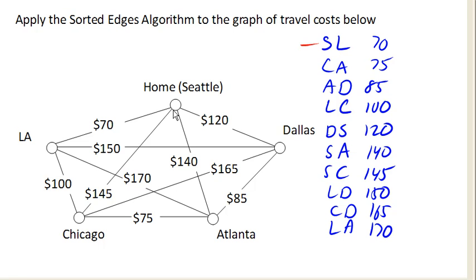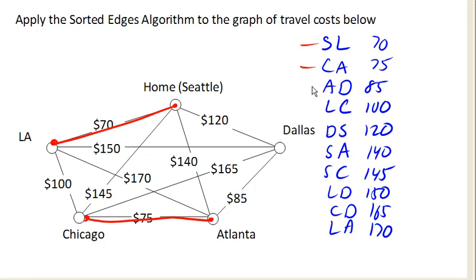Seattle to LA is our first edge. Next was Chicago to Atlanta, right? Chicago to Atlanta for 75. Notice that these do not have to be connected yet — everything will connect out just fine in the end. So next we've got Atlanta to Dallas, that's our next cheapest. LA to Chicago. Dallas to Seattle.